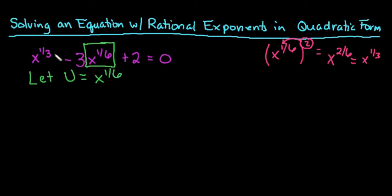The reason that I'm doing that is because, remember, I just said that x to the 1/3 is really x to the 1/6 squared. So now what I can do is I can say that this is really a variable squared minus 3 times that same variable plus 2 equal to 0.